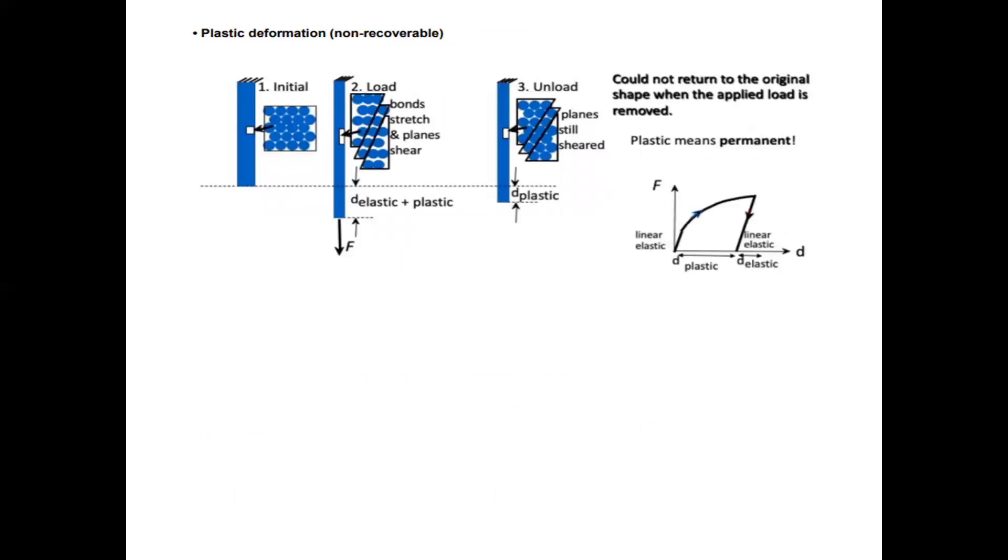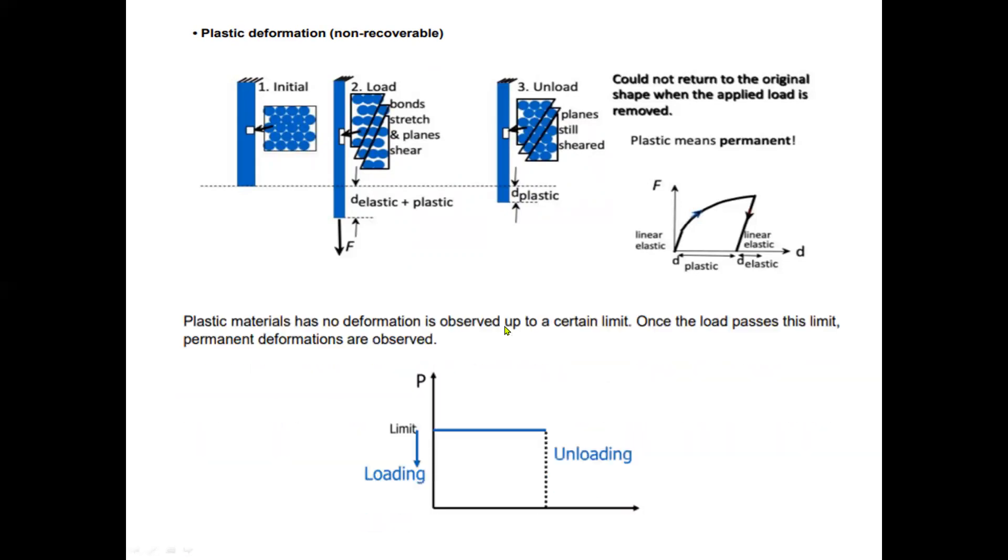Plastic deformation is considered non-recoverable. First we have the initial, the load, and the unloading process. Could not return to the original shape when the applied load is removed. Plastic means permanent. Plastic materials have no deformation observed up to a certain limit. Once the load passes this limit, permanent deformations are observed.